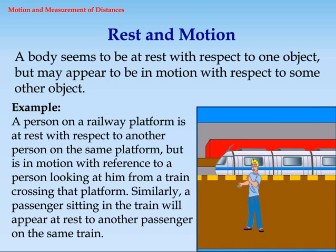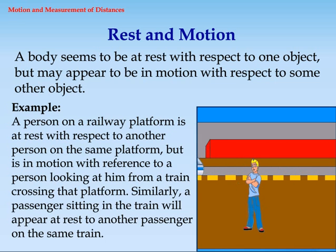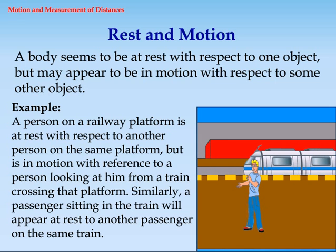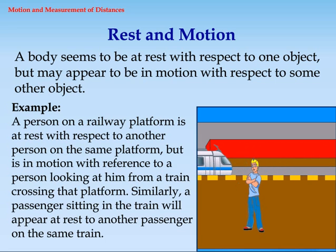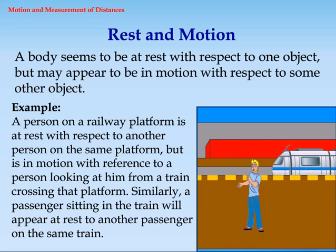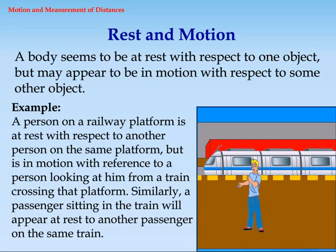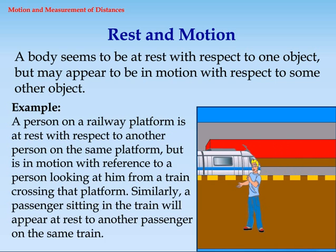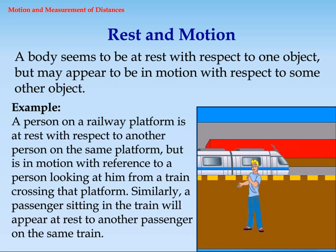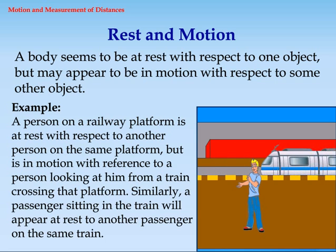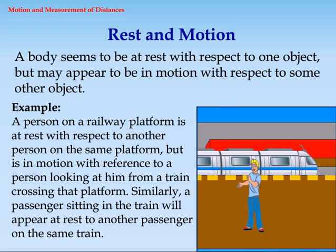Rest and motion: A body seems to be at rest with respect to one object, but may appear to be in motion with respect to some other object. Example: A person on a railway platform is at rest with respect to another person on the same platform, but is in motion with reference to a person looking at him from a train crossing the platform.